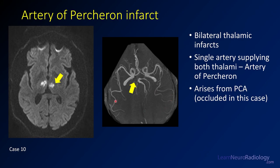The artery of Percheron is a variant artery that comes off a single PCA. In this case, you have abnormal diffusion in the medial thalami bilaterally. You might think about toxic exposure or poisoning, but on the MR angiogram you'll see that the PCA is missing — and when you see that, you should be thinking about infarct. The artery of Percheron likely came off that proximal PCA and is causing a bilateral infarct. The other choices are good differential considerations, but it's the MRA that tells you the answer.